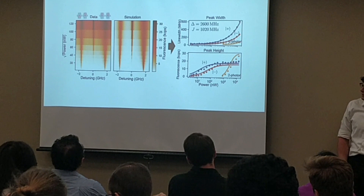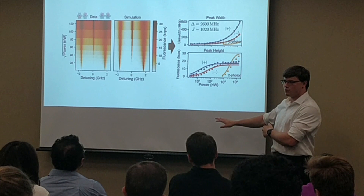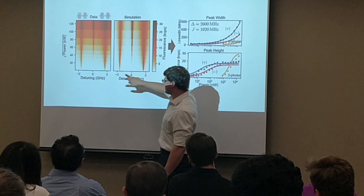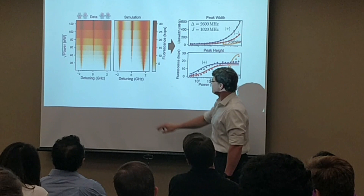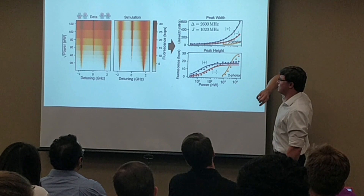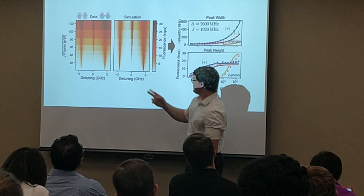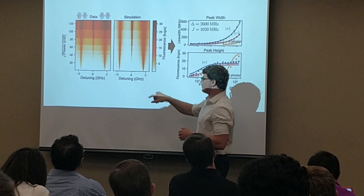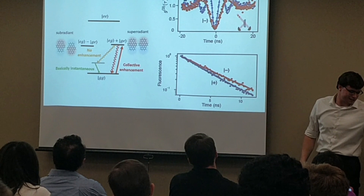To confirm the measurements, we took the Rabi frequency, the lifetime enhancement, and the calculated branching ratio, and put them all into a quantum Monte Carlo simulator. We simulated the excitation spectrum — scanning the laser across the transitions and collecting photons — at many different powers, then compared the simulation with our measurements. You can extract the widths and heights of all the peaks and plot them against each other to verify that the simulation well matches the data. Roughly speaking, the widths of the resonances contain information about the coupling strength, while the heights contain information about both the coupling strength and the branching ratio.